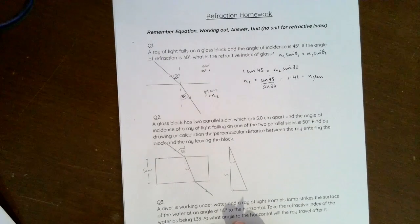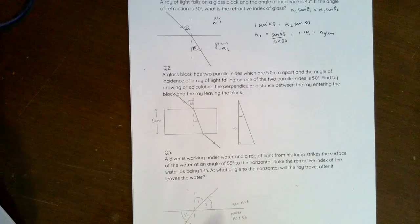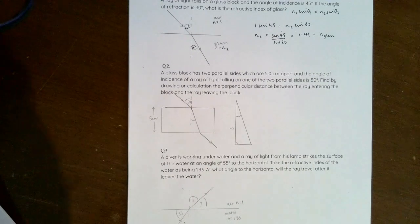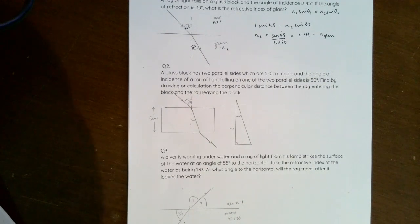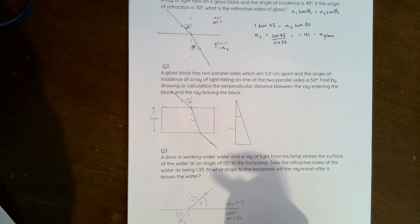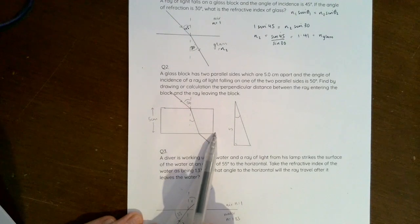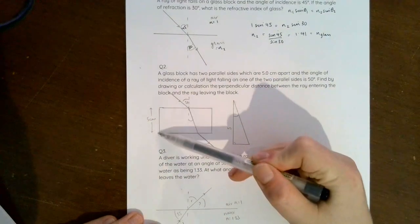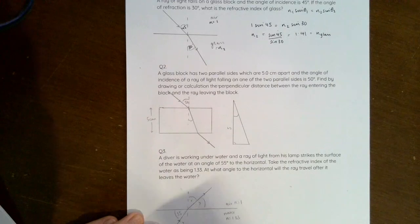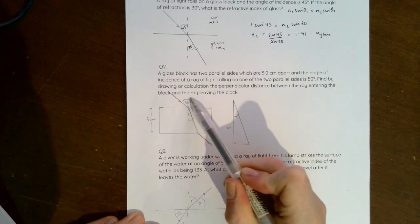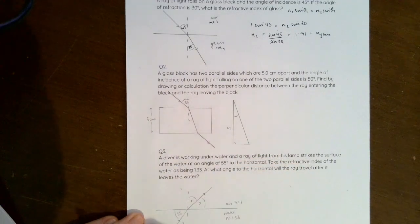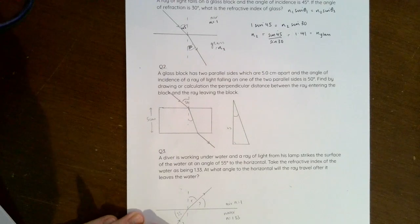Question two then has a bit more to it that we need to have a little look at. A glass block has two parallel sides which are five centimeters apart, and the angle of incidence of a ray of light falling on one of the two parallel sides is 50 degrees. So I've got two parallel sides that are five centimeters apart, the angle of incidence for the ray coming in is 50 degrees.